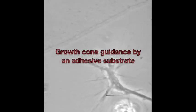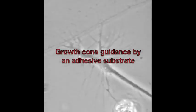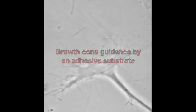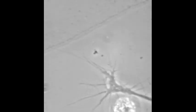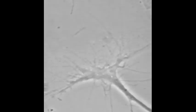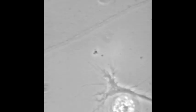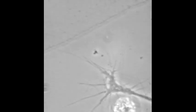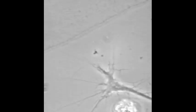In this movie, a sensorimotor growth cone crosses from fibronectin to a laminin-coated surface. Filopodia extend in all directions from the growth cone and reach 50 microns to detect the laminin and start the turn towards the border.